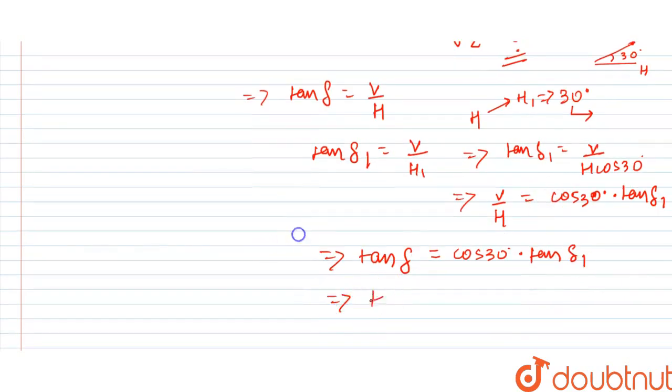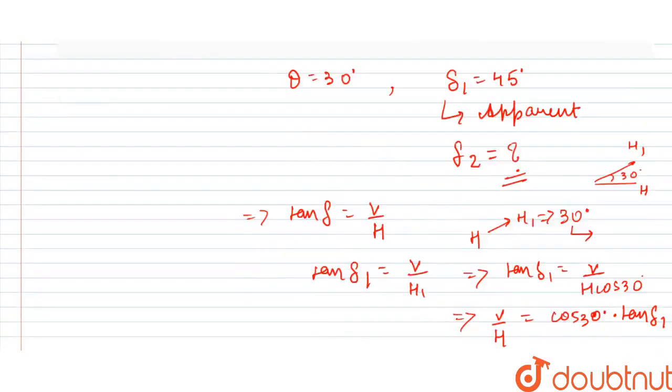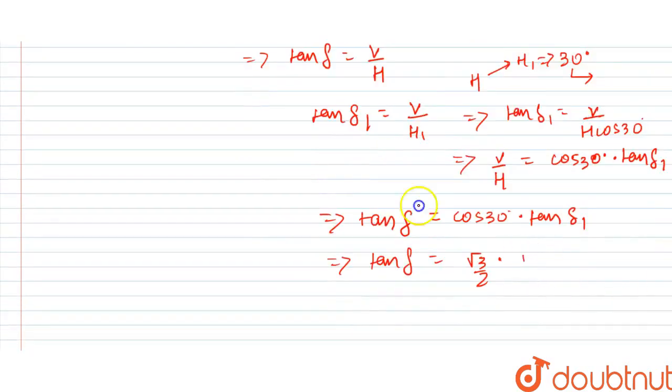Now we can see tan delta value will come to us root 3 by 2. Delta 1 value initially was 45 degrees, so tan 45 is 1. So tan delta will come to us as 1.73 by 2.